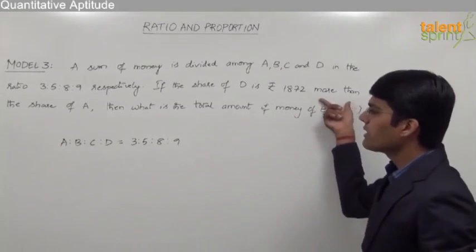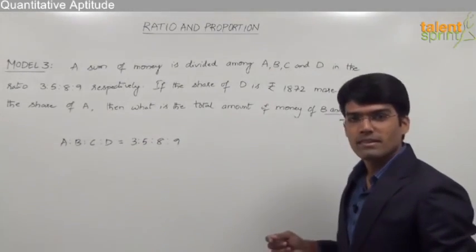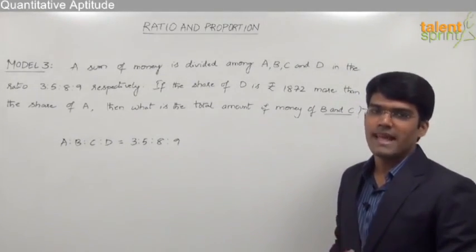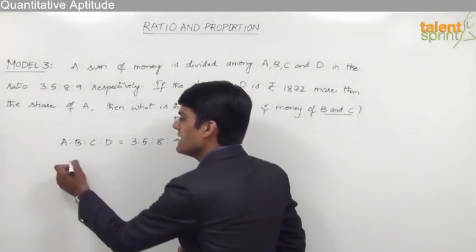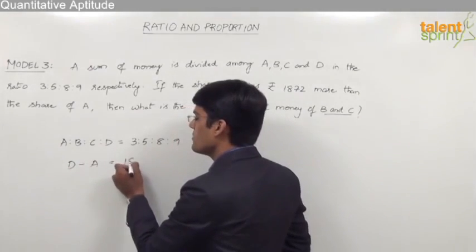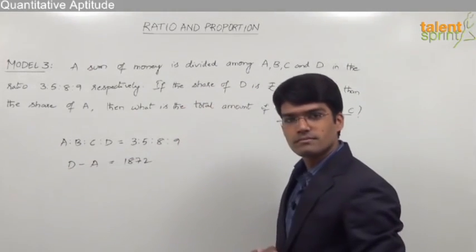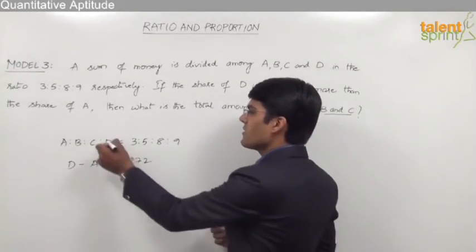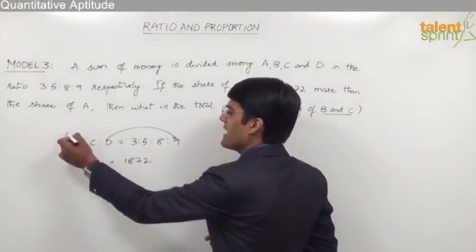The next statement here is: the share of D is 1872 more than the share of A. That means D has got rupees 1872 more than A, so we can say D minus A is equal to 1872.